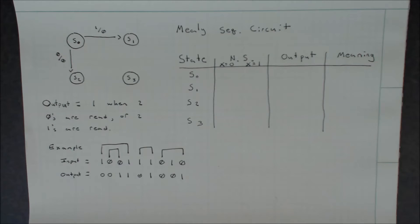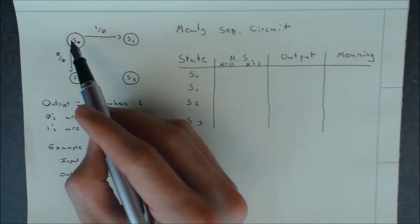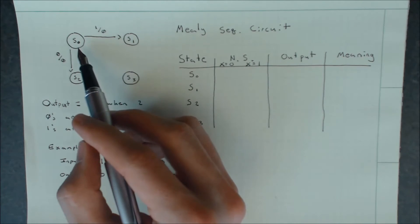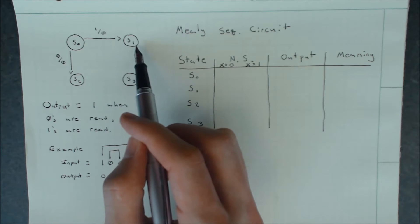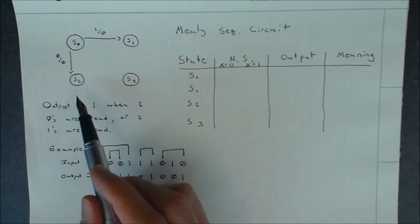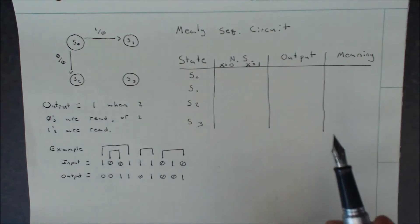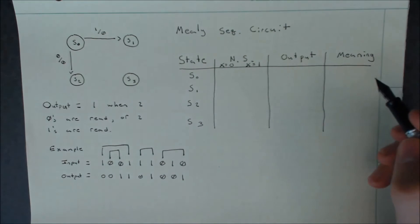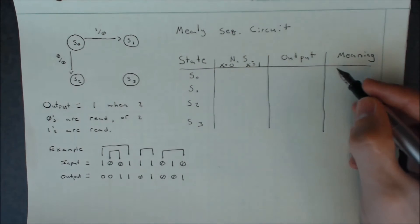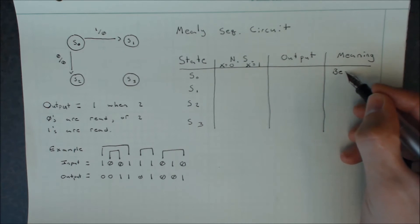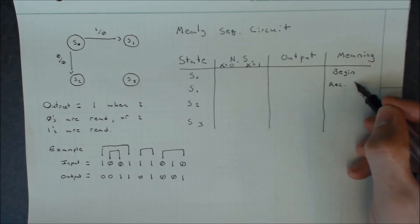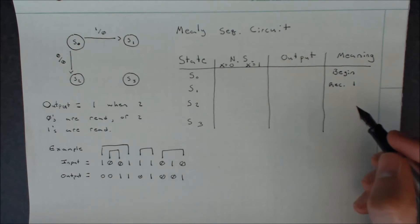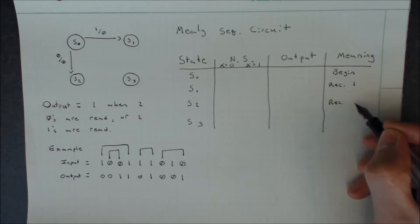The first thing we're going to do is notice that we already have some information in our diagram. We know that S0 will be the starting state, and we know that the state where we have a single input of a one will be S1, and the state where we have a single input of a zero will be S2. It's useful to define the meanings of these states ahead of time: S0 is the begin state, S1 is the received-one state, and S2 is the received-zero state.